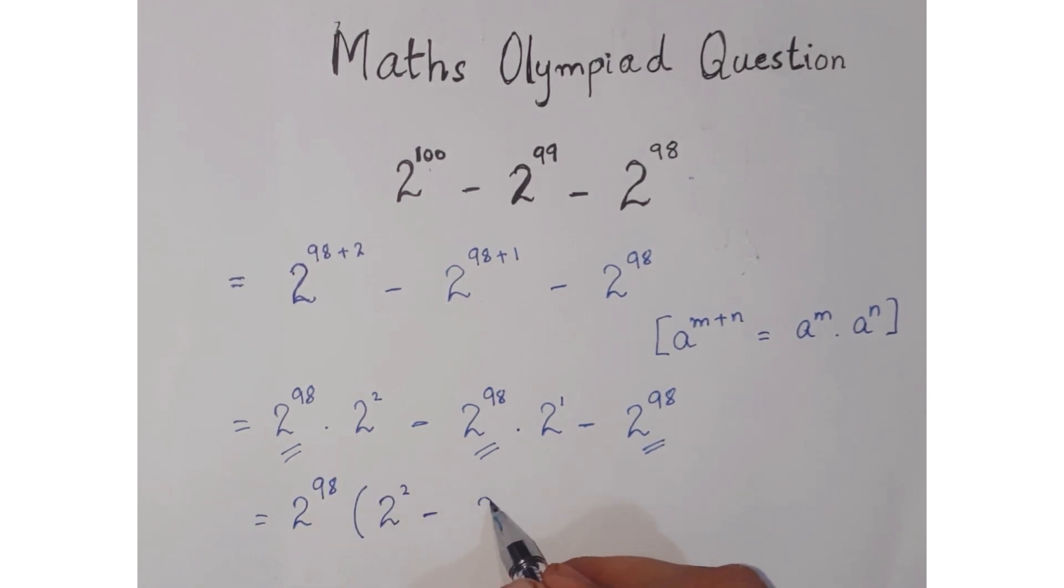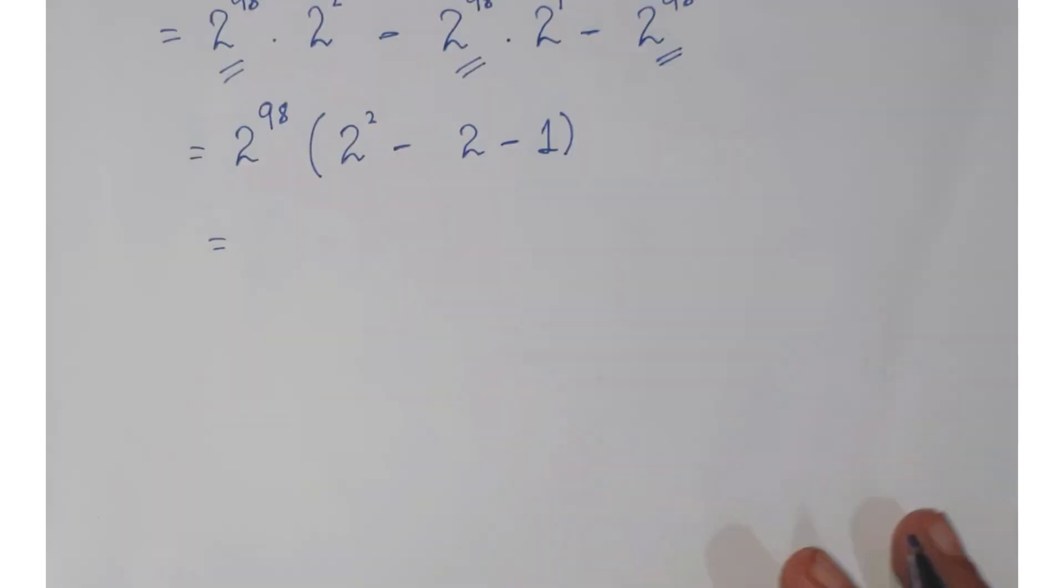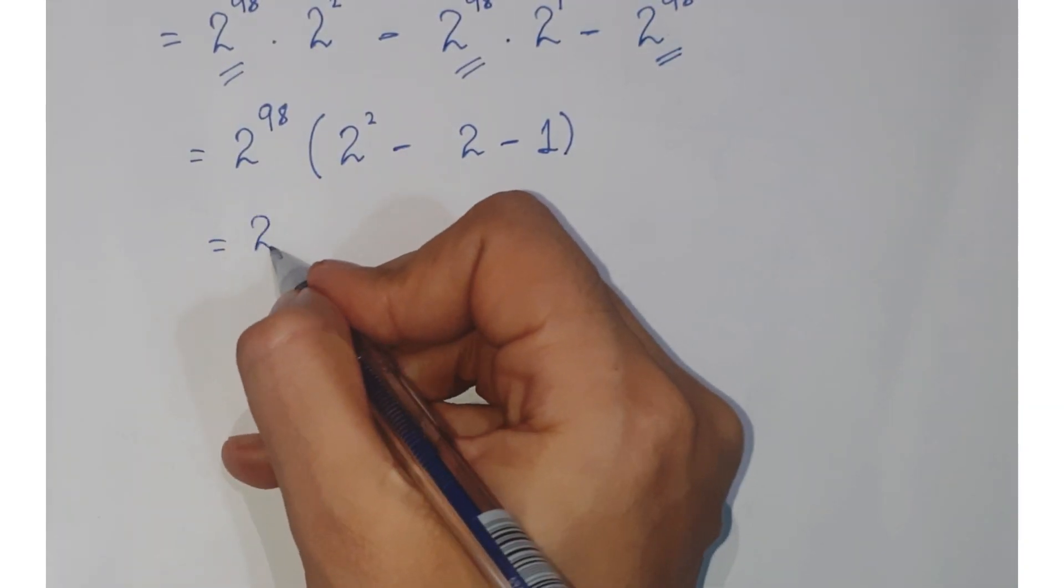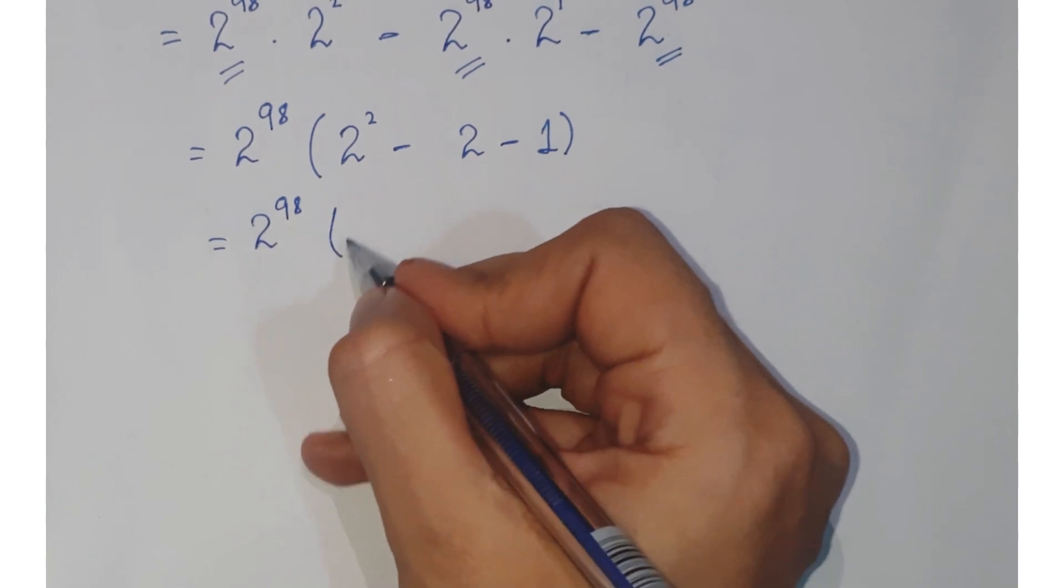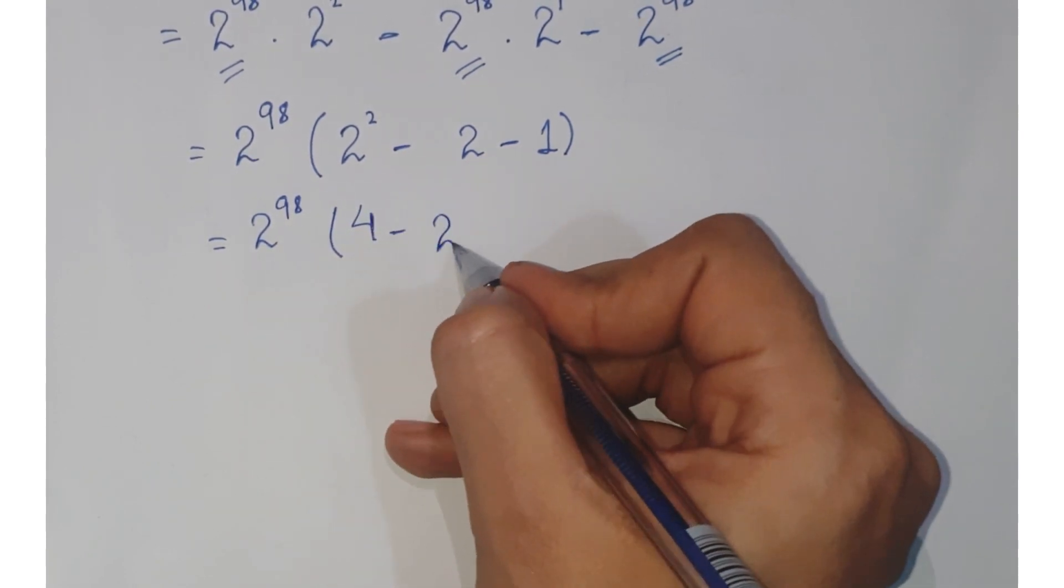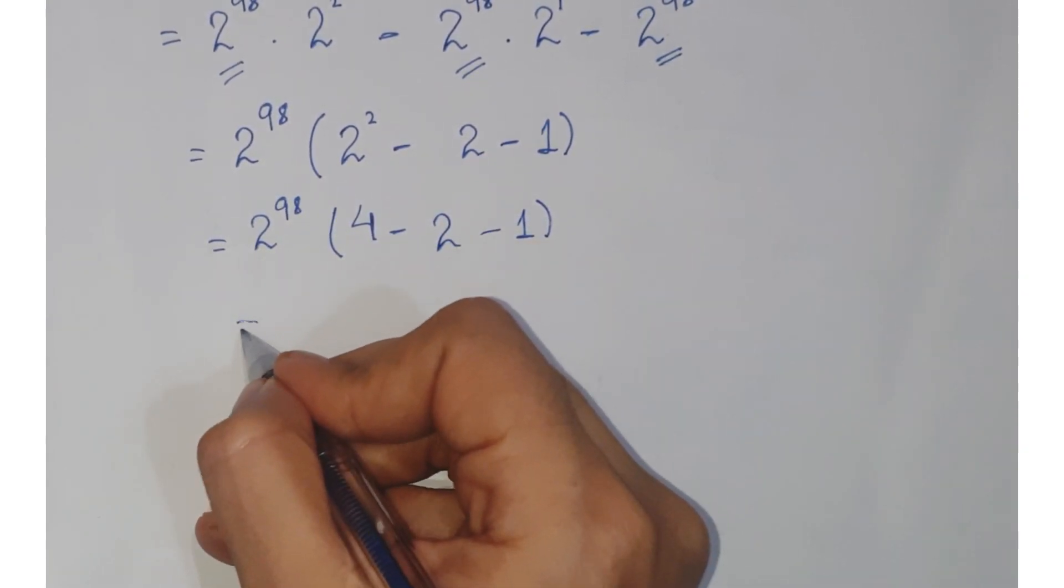And you are left with 2 raised to the power 2 minus 2 minus 1. So you can write it as 2 raised to the power 98 multiplied, this is 4 minus 2 minus 1.